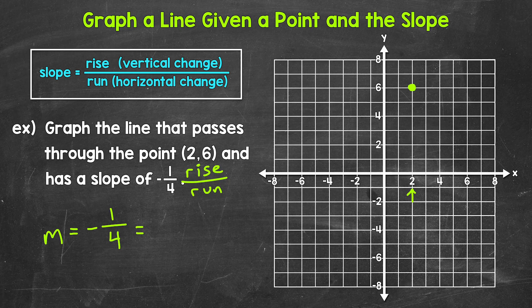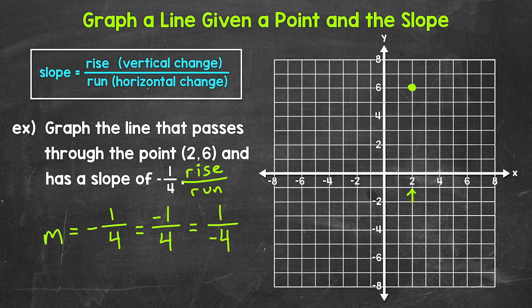So we need to write this as negative 1 over 4, or 1 over negative 4. All three of these represent the same slope, negative 1/4. But having that negative in the numerator or denominator helps us with the rise and the run.